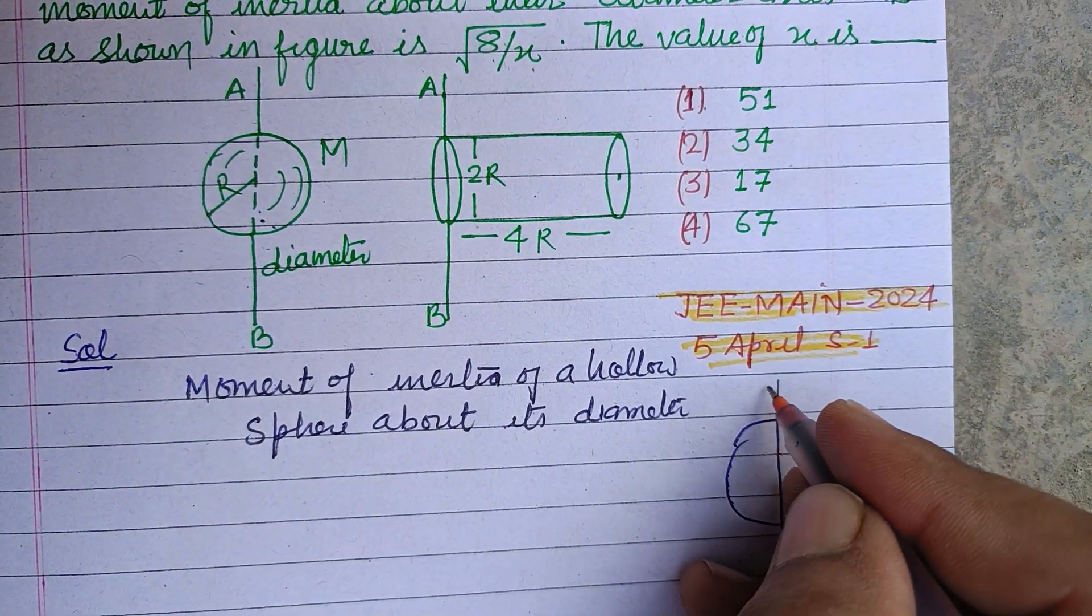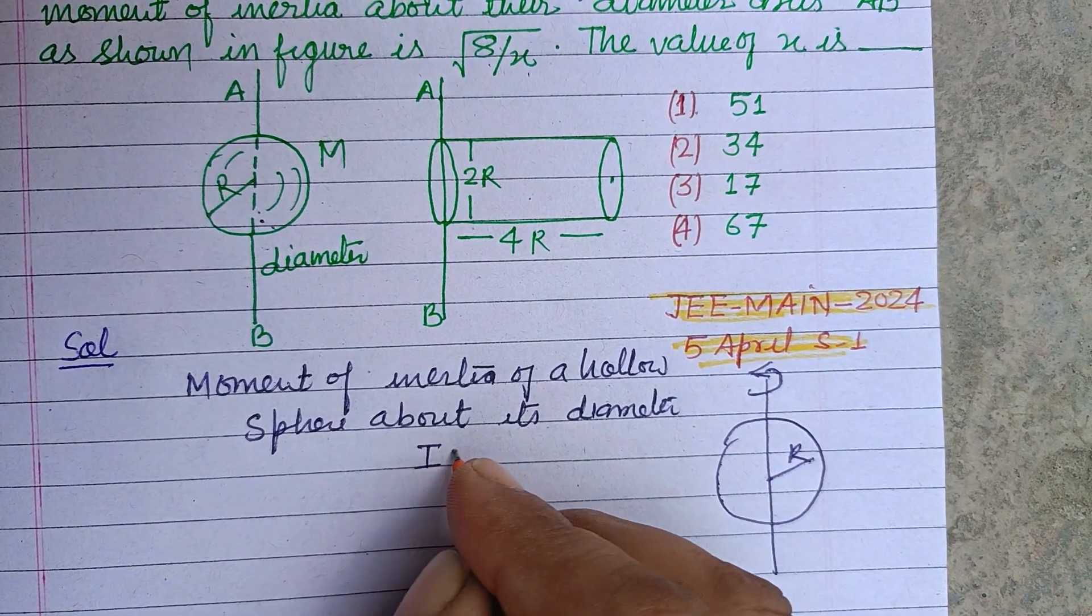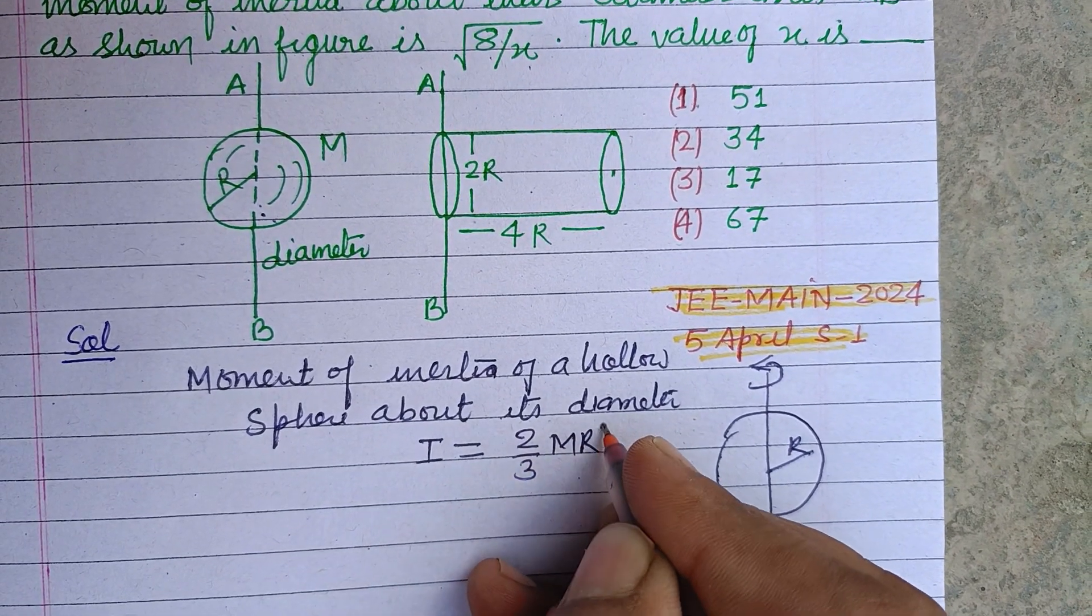So this is the rotational axis and this is the radius, and it will be 2/3 mR².